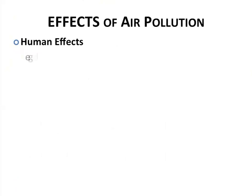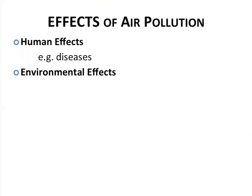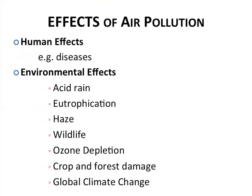The major effects of air pollution are twofold. The first are human effects — badly affecting human health in the form of various diseases, particularly lung and heart diseases. The environmental effects include oxides of sulfur and nitrogen creating more severe pollution that combines with water to form acid rain. Eutrophication refers to excessive richness of nutrients in a lake or body of water, frequently due to runoff from land, which causes a dense growth of plant life.